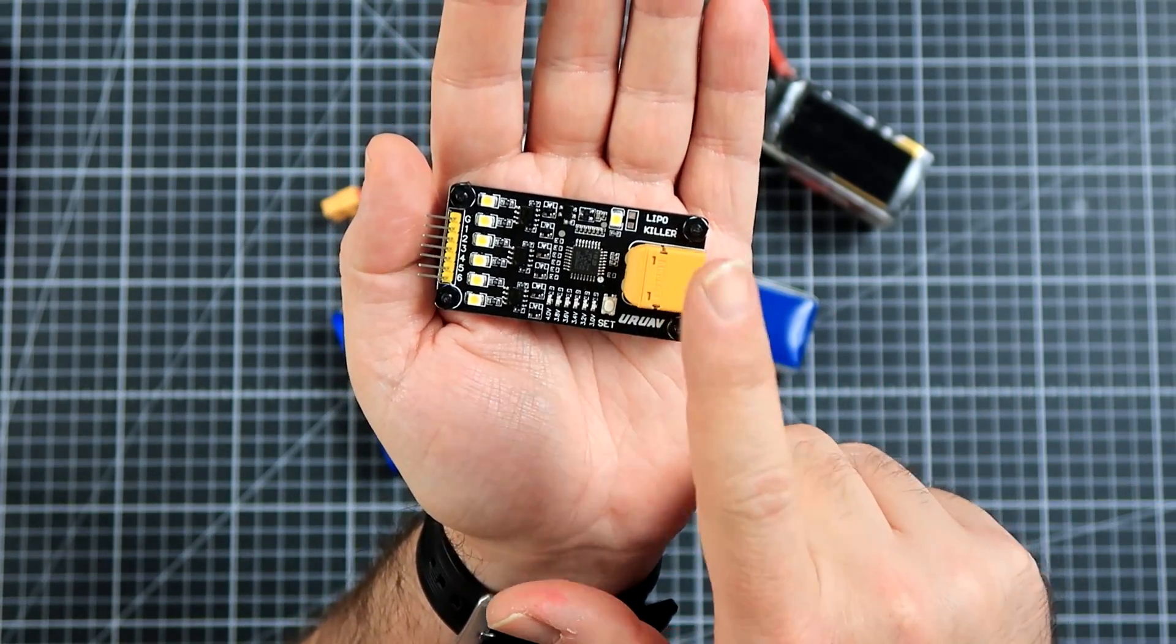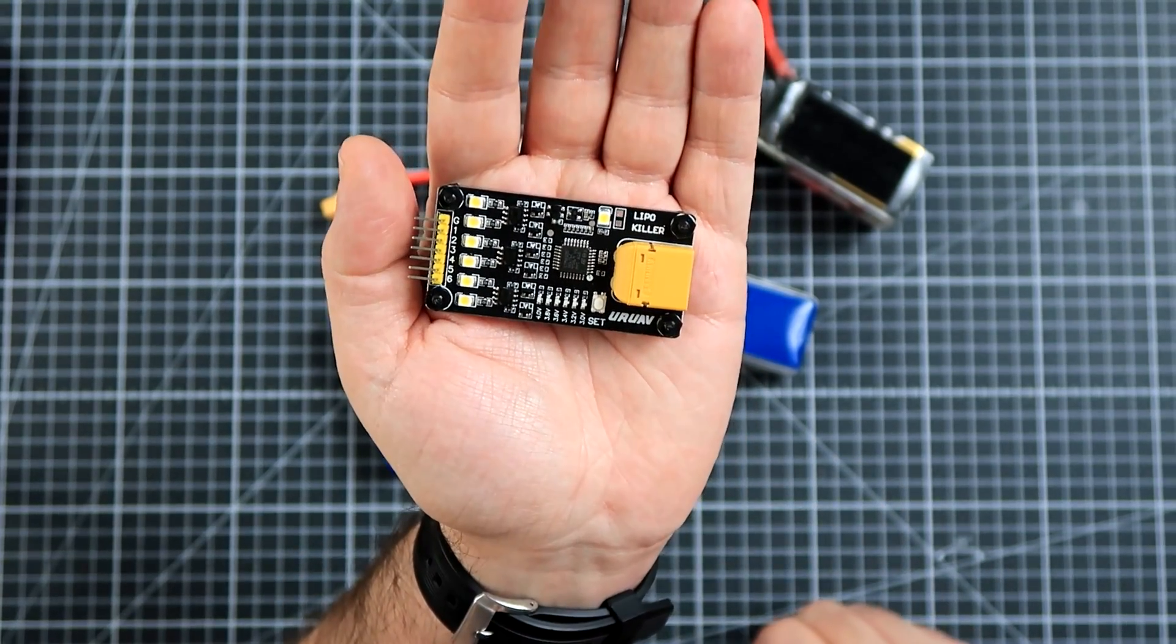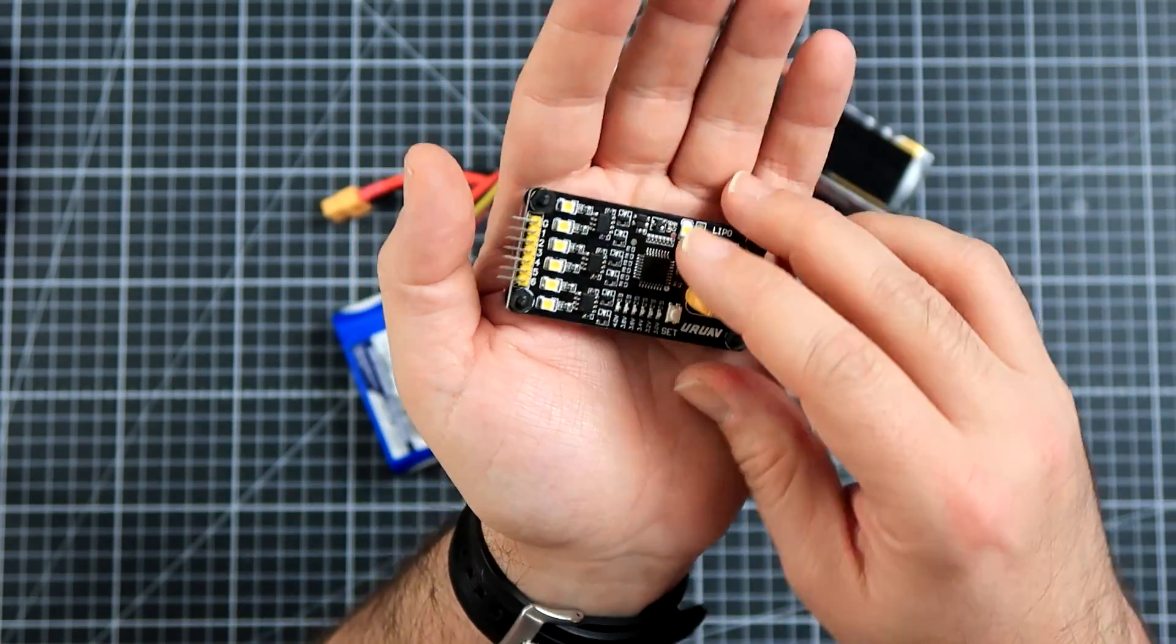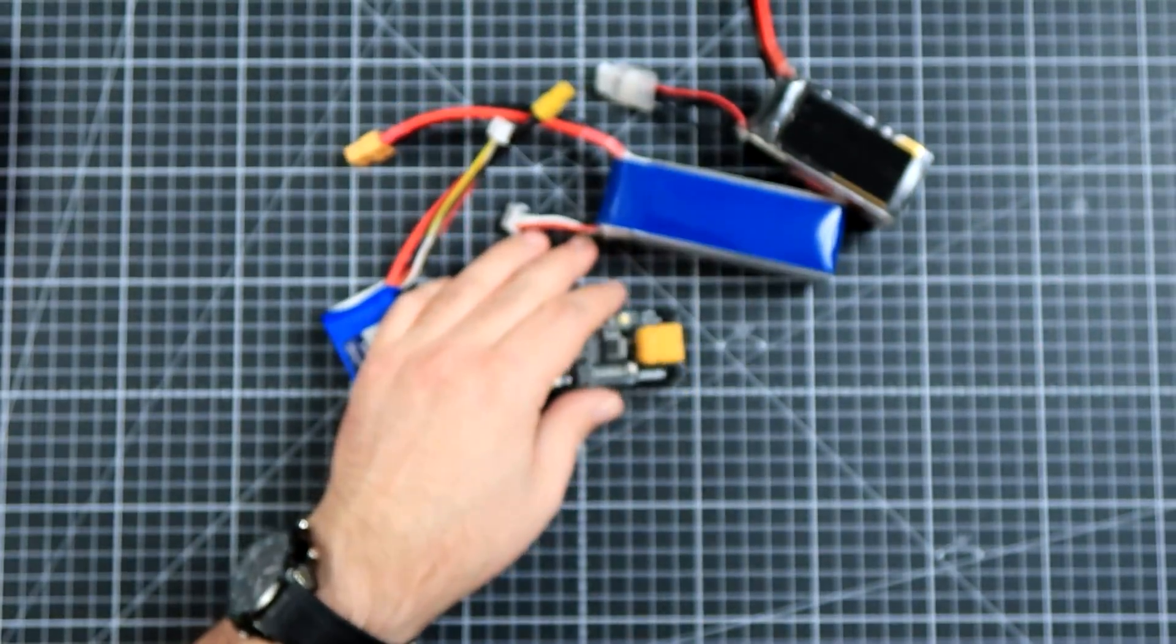It has an XT60 plug on one side, the balancing connector on the other side, a few LEDs, a button, a CPU, MOSFETs, and resistors on the backside.